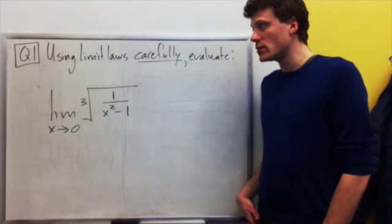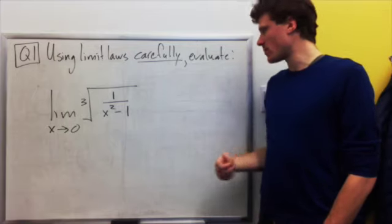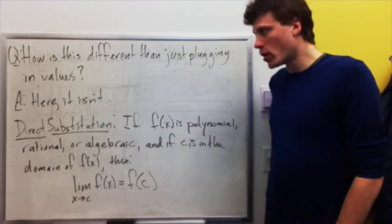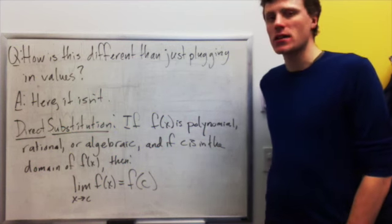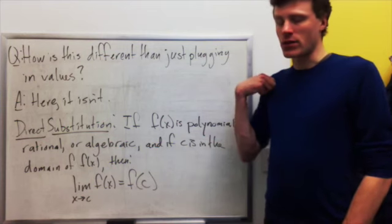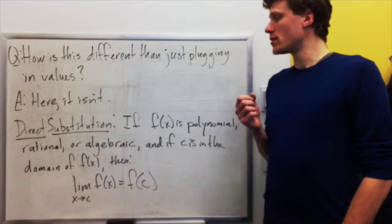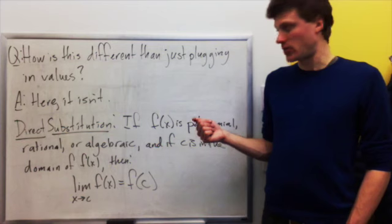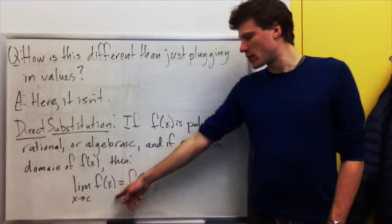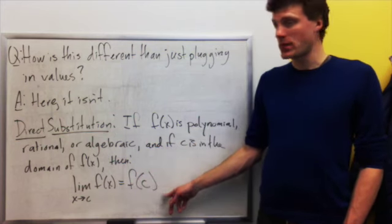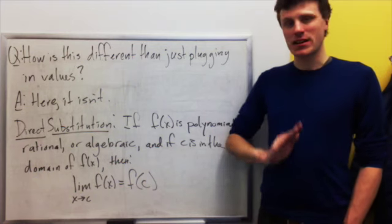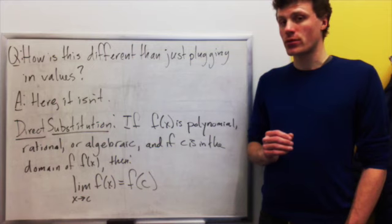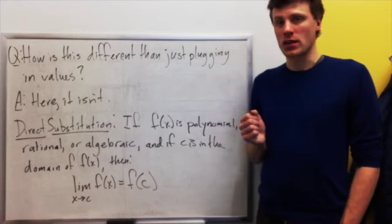Question one: using the limit laws we've just discussed, carefully and explicitly evaluate the limit as x approaches zero of the cube root of (1/(x² − 1)). You might be wondering how this is different from just plugging in values. The answer — insofar as all these rules are concerned — is that it isn't. This is called the direct substitution property: if f(x) is a polynomial, rational, or algebraic function, and c is in the domain of f(x), then the limit as x approaches c of f(x) is simply f(c). But in the context of section 2.3, we want to practice using limit laws carefully, because when we reach more difficult situations where direct substitution does not apply, we need to be precise in applying our limit laws.